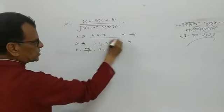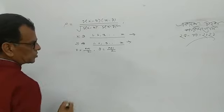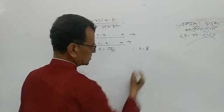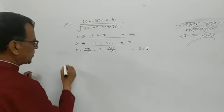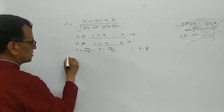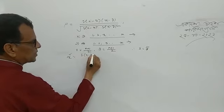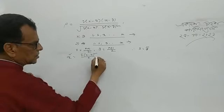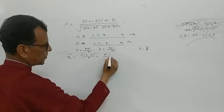Why? Because these are the first n natural numbers. So x-bar equals (n plus 1) divided by 2, and y-bar equals (n plus 1) divided by 2. Therefore x-bar equals y-bar. Now sigma squared x: sigma squared x equals summation (xi minus x-bar) whole square divided by n, which for the first n natural numbers equals (n squared minus 1) divided by 12.